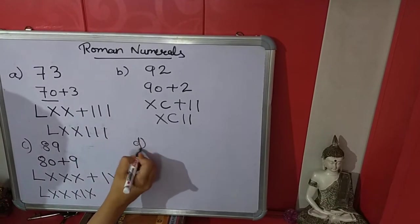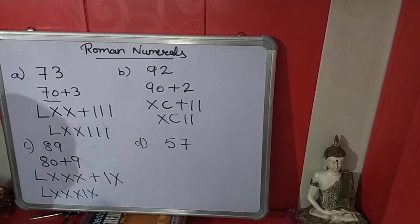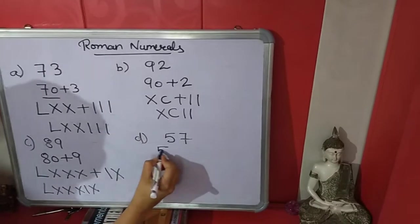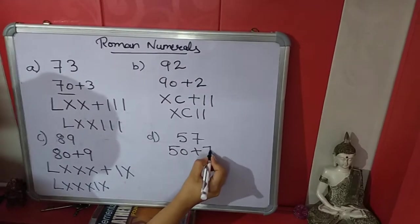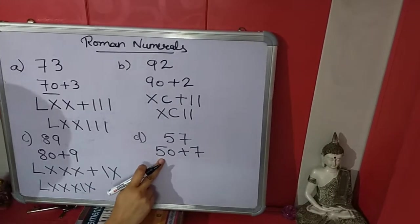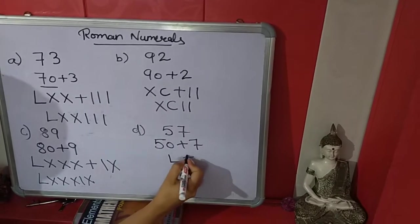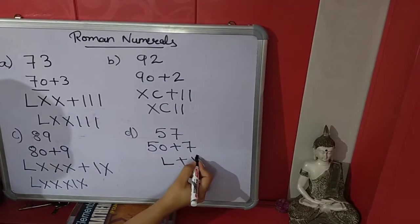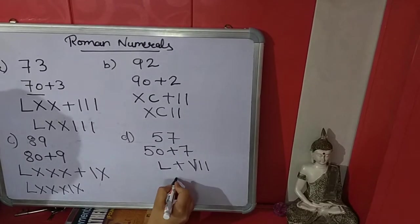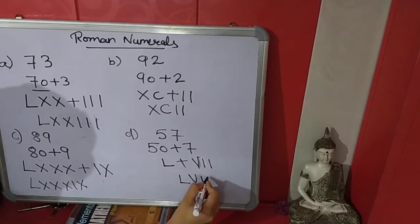57. Expand it, 50 plus 7. What is Roman number of 50? L. And 7? 5, 6, 7, so it will be VII. So 57 is LVII.